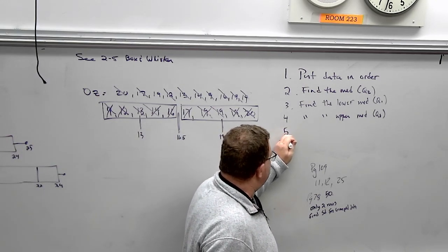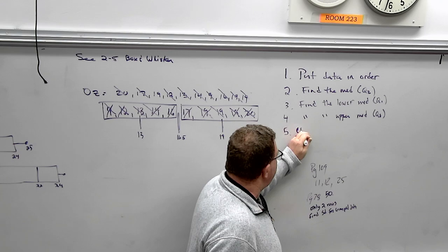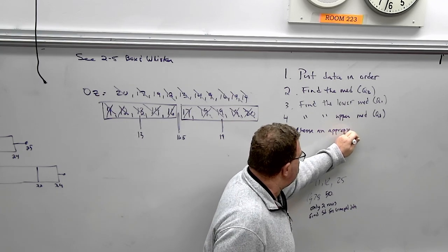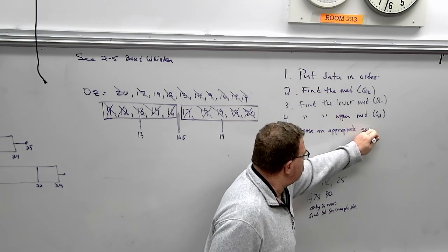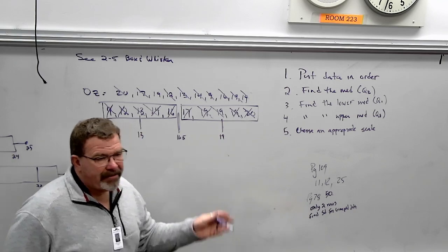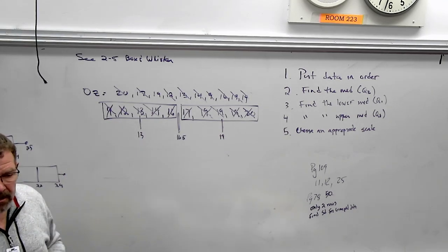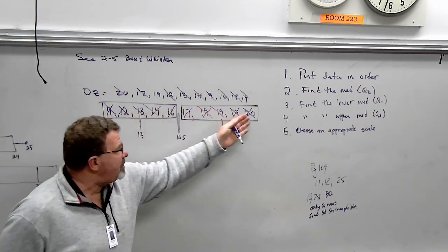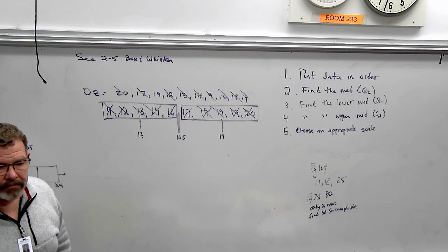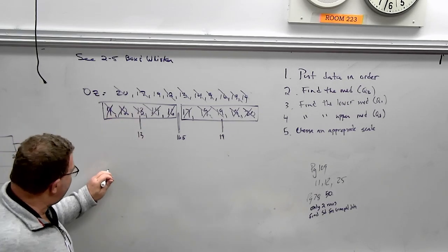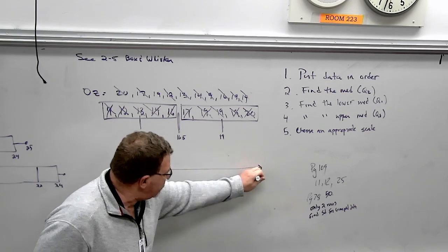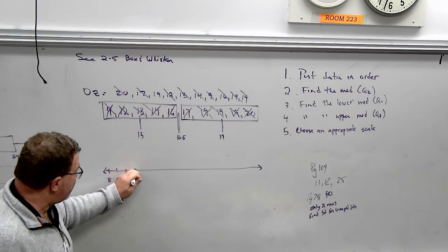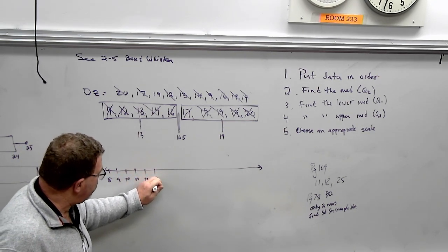Step five, which I feel is the most important step. Choose an appropriate scale. Okay. Go by ones. Go by threes. Go by sevens. Go by tens. And just look at your data. Look at the lowest number to the highest number. If I'm going from nine to 99, then I'm probably going by tens. Okay. Just pick a scale. I don't think nine to 20 is that hard to do. So I'm probably just going to go by ones. But maybe you feel, no, I would have gone by twos, and that's perfectly fine.